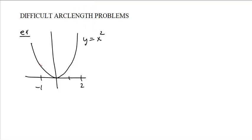And let's say we want to find the distance from negative 1 up to 2. Okay, what's the length of this curve? I mean, we've done linear then quadratic. How bad can that be?